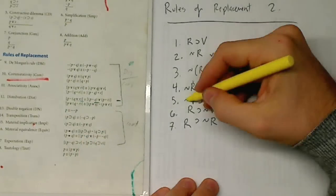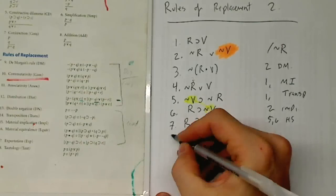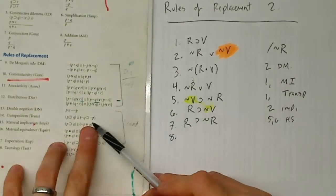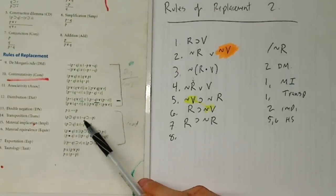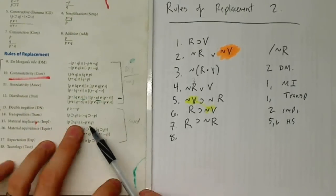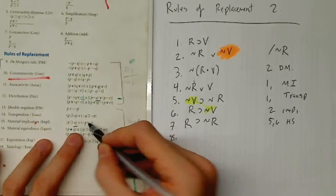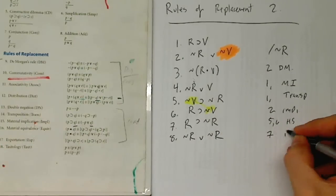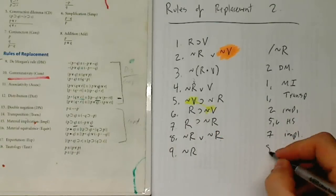But now that I have R→¬R, how am I supposed to get ¬R? Take a look at the implication rule. The implication rule says the Q stays the same but a negation gets added when we change the sign. So that means I'm going to get ¬R∨¬R — that's line seven implication. And then now that I have ¬R∨¬R, well that means that's just a tautology. So line eight is going to be ¬R, line eight tautology.